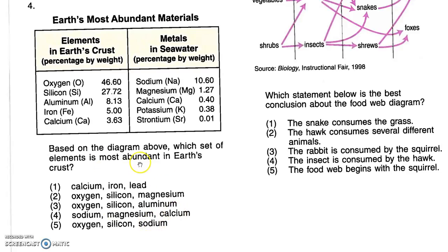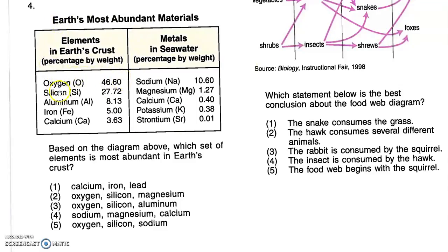Most abundant — so what is there most of? Looking at the table, we might consider oxygen, silicon, sodium as the three elements with the highest percentages. But we have to read carefully — they ask for the most abundant elements in Earth's crust. So we exclude the right side of the table, which gives us too much information, and look only at the left side. We can see oxygen, silicon, and aluminum are the most abundant elements. That is answer number three.